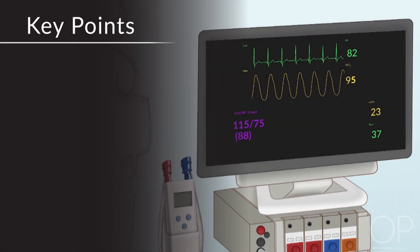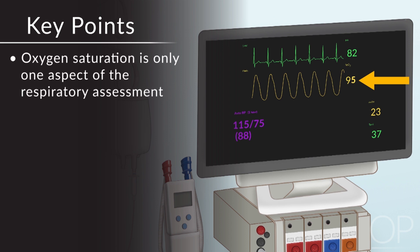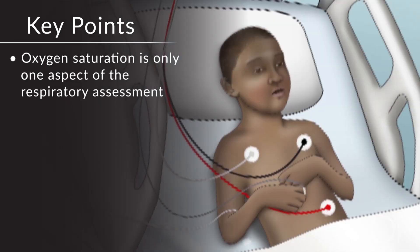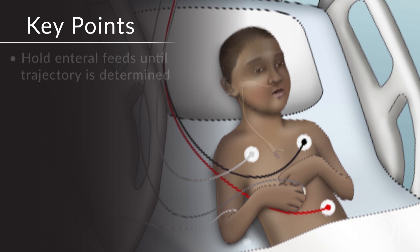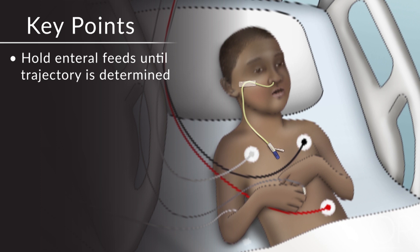Key points as you're doing your ABC assessment: oxygen saturation is only one aspect of your respiratory assessment, and it may be misleading and not reflect ventilation or CO2 exchange. Use heart rate as a monitor. Use the level of consciousness as a good index. Think about positioning — how does it help or hurt respiratory mechanics? Is this someone who's better sitting upright, sidelying, or prone? Acutely, consider holding enteral feeds, whether via NG tube, gastrostomy, or post-pyloric, to avoid compounding issues with vomiting and aspiration.